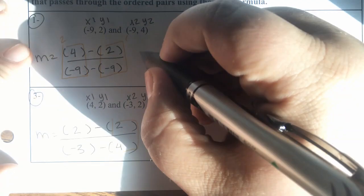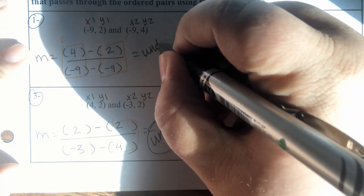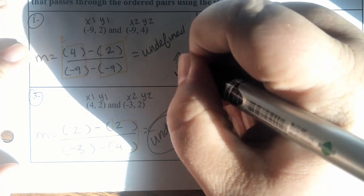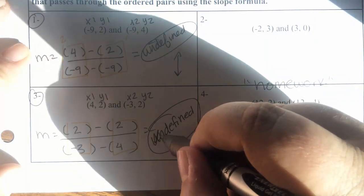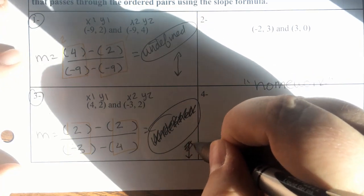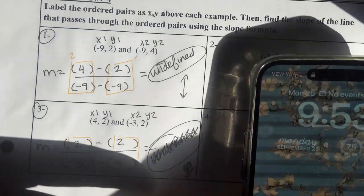That was for number 1, actually. Number 2 is not undefined. Sorry, number 3. Number 3 has a different value. So, let's look at number 3. Okay.